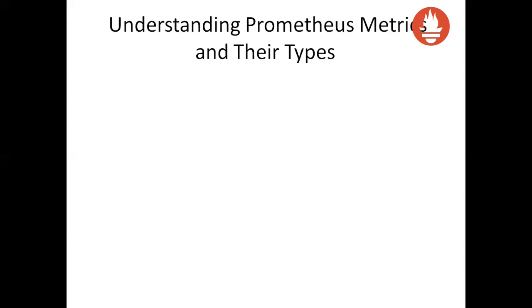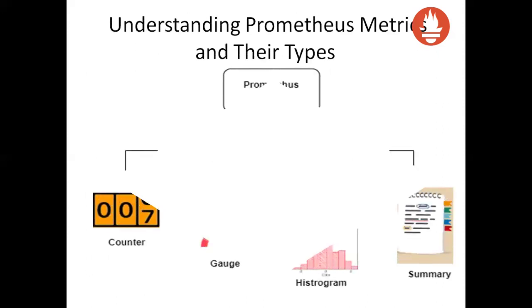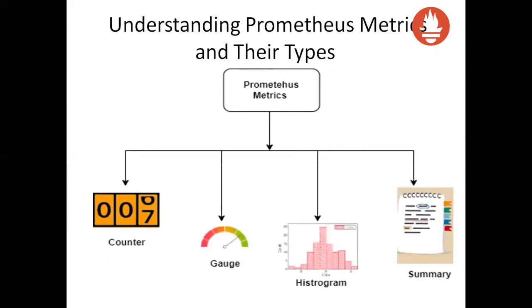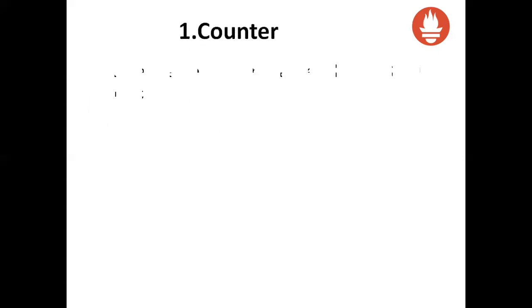In this diagram, you can see there are four types of Prometheus metrics: counter, gauge, histogram, and summary. We will see each one of them one by one. Let's start with the first one — counter.